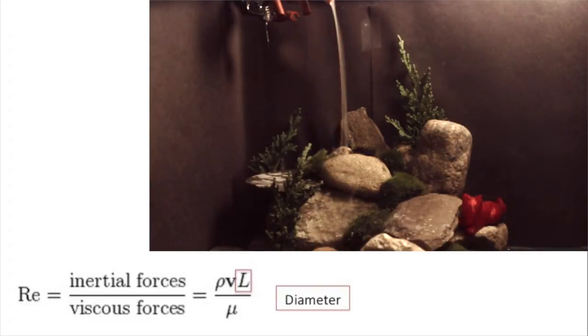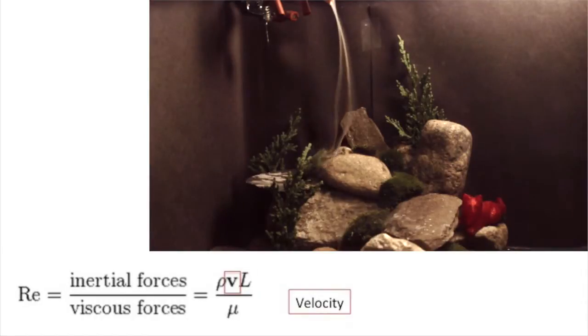By observing the difference in the flow at the channel outlet and near the ground, one can also see that as the velocity of the smoke increases due to gravity, the flow becomes less laminar and more turbulent.